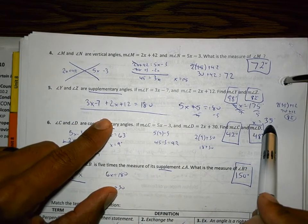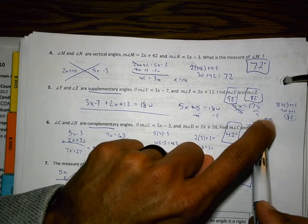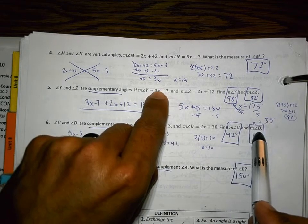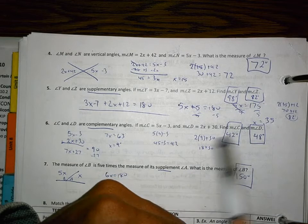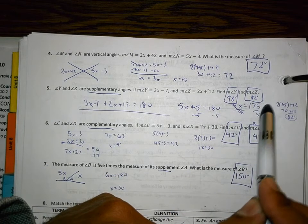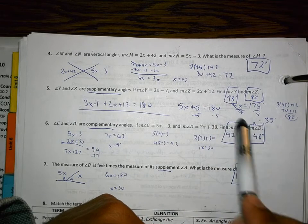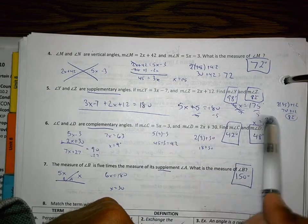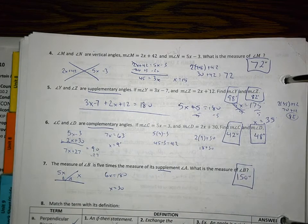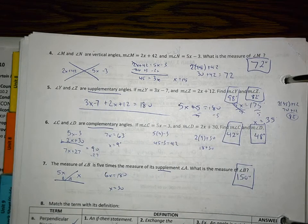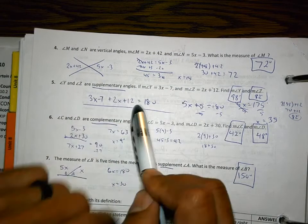It says find angle y. That means plug that x back in so you can figure out how big that angle is. And you can use a calculator for that. Do 2 times 35 plus 12 to find angle z. And plug in 3 times 35 minus 7 to find angle y. And you'll find that those two angles are 98 and 82. Vertical angles, you set equal to each other. Supplementary angles add up to 180.